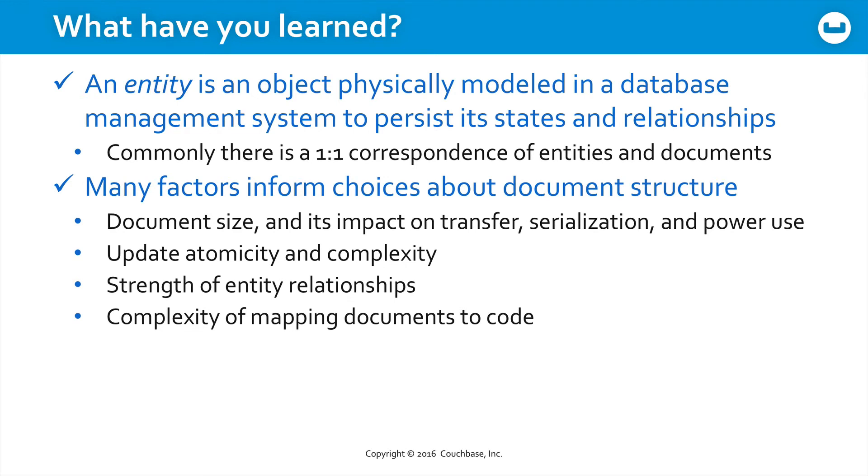There are a lot of factors that inform the choices you're going to make around document structure. What is the size of the document and what is the size of the document ID? What will the impact of these sizes be on transfer speed, serialization in your client, and overall power use if you're working in a mobile environment versus a server environment? Do you need to consider atomicity? Remember that although in Couchbase 4.5 you can perform updates on a whole document or on an individual attribute, if you have multiple related attributes that must update atomically, then you're going to want to place them in the same document and update them at the same time.